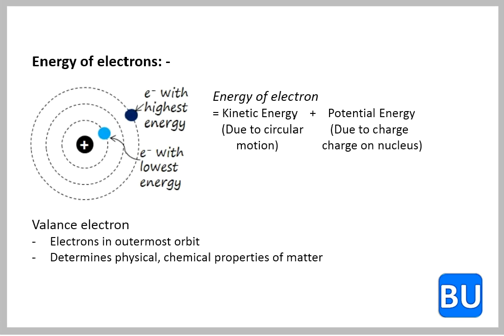The energy of an electron is combination of kinetic energy due to circular orbital motion and potential energy due to charge on nucleus. The valence electrons are important for the flow of electrical charge. It may be noted that the continuous flow of free electrons created due to electrostatic force is called as electric current.